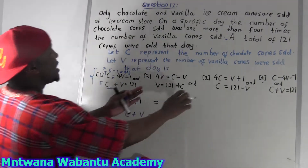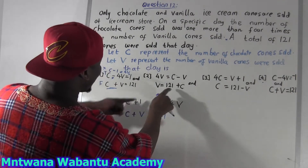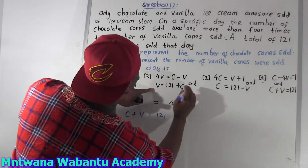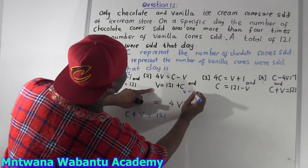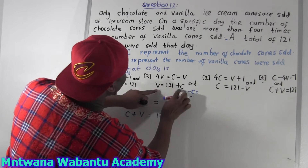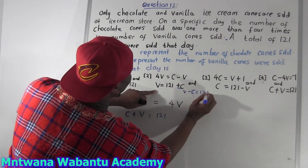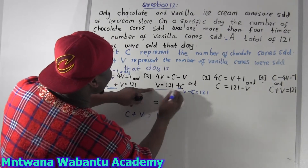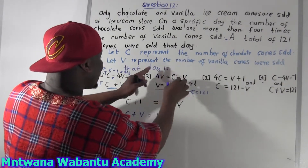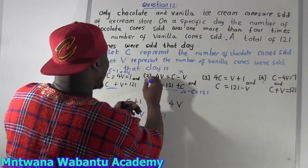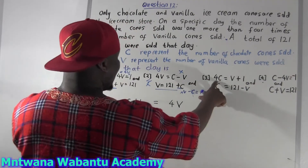Option two: if you take this back it becomes V, and with the sign change it goes to minus V minus C equal to 121. That's wrong because it's not equal to C. If that part is wrong, it doesn't matter what the other part says — everything is wrong. Number two is wrong. Coming to option three — there's no 4C, so that's wrong too.